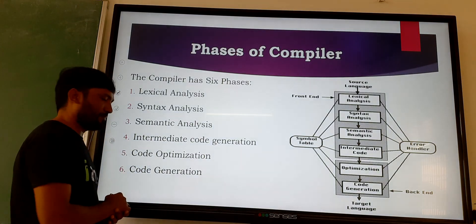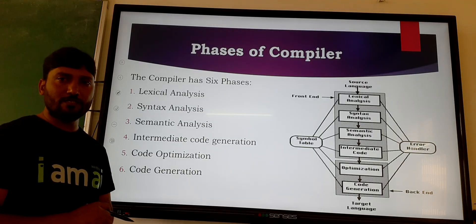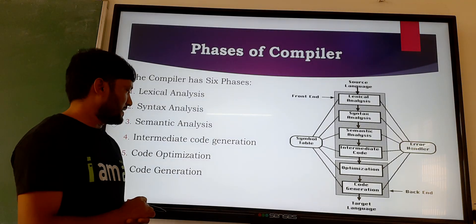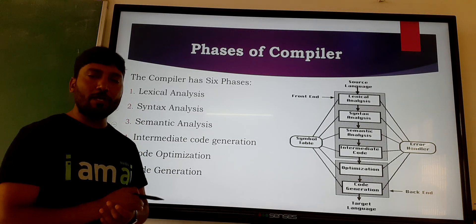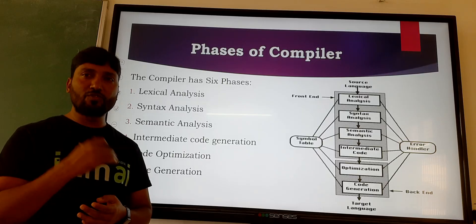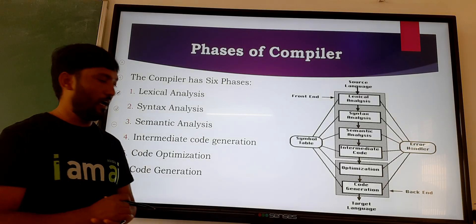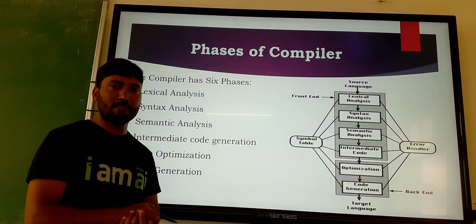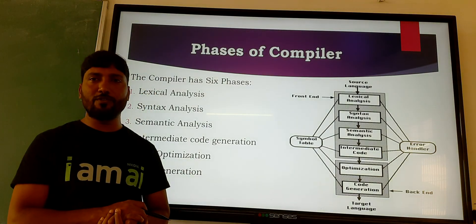The sixth phase of the compiler is code generation, which takes the three address code as input and generates the output in target language.